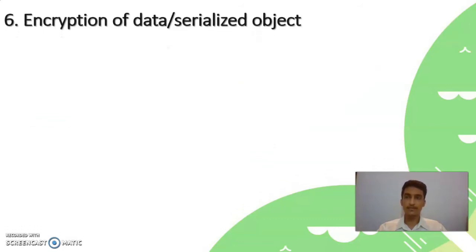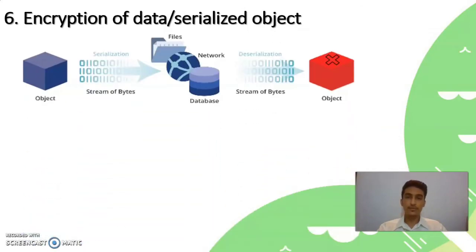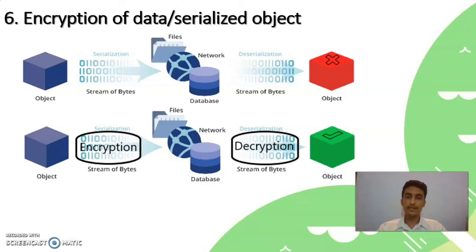The last method is encryption of the serialized object or data. If we leave the stream of bytes — the serialized object — as-is and transfer it over the network, someone on the network can capture it, put malicious content in it, and send it to the server, which can affect the security of the system. So it is good practice to encrypt the serialized object with a key that is shared only between the authenticated users and the server, reducing the chances of system breaching.